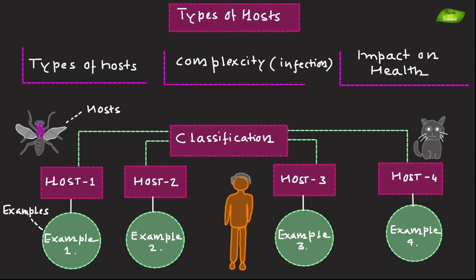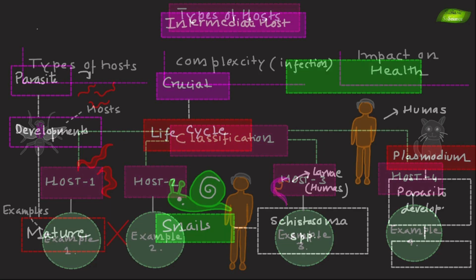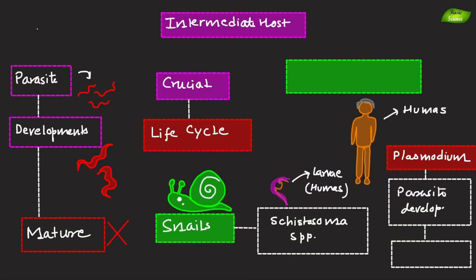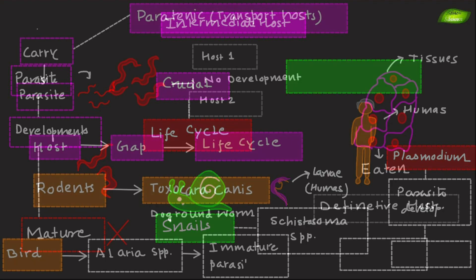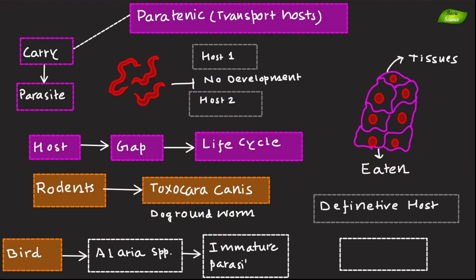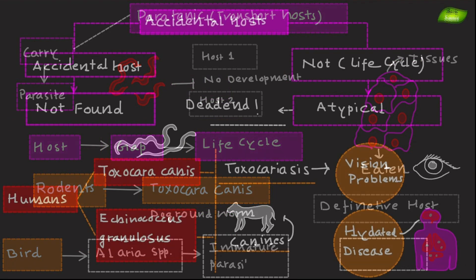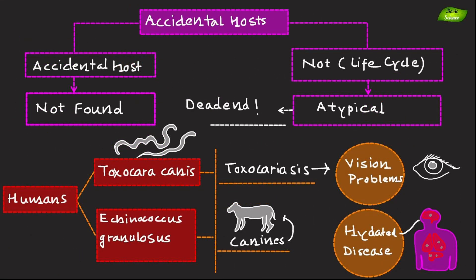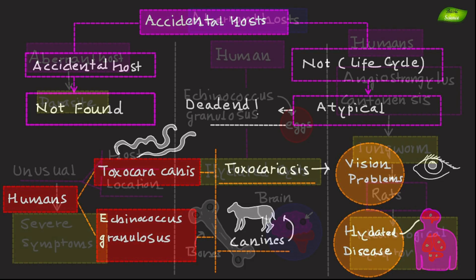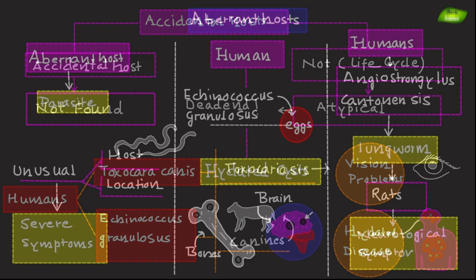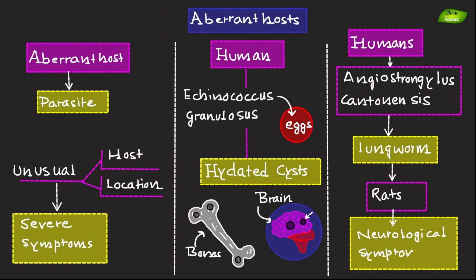Hello everyone, welcome to today's video. Today we will understand different types of hosts — for example, definitive host, intermediate host, paratenic host, reservoir host, etc. We will also understand how the parasite interacts with the host with certain examples. I hope this video is going to help you understand types of hosts in parasitology in more detail.